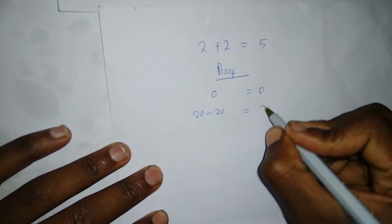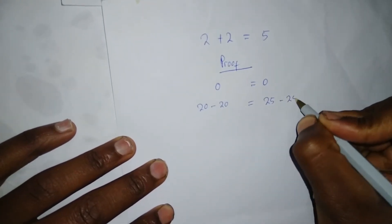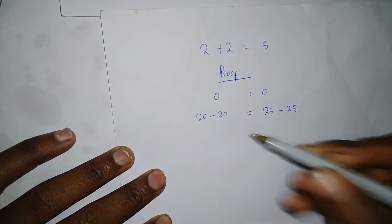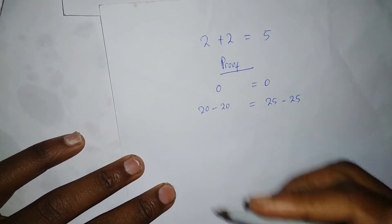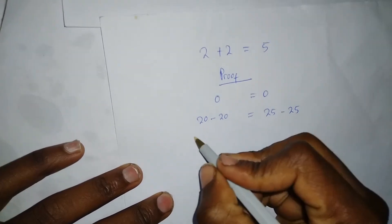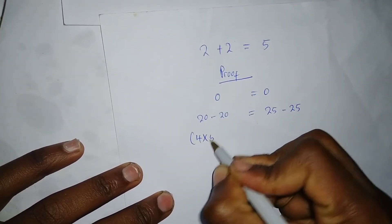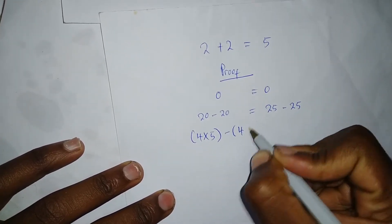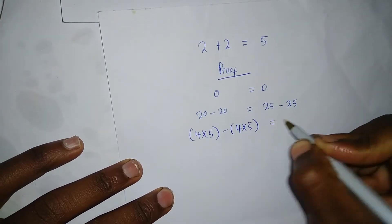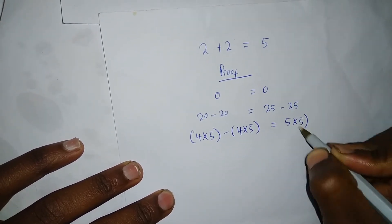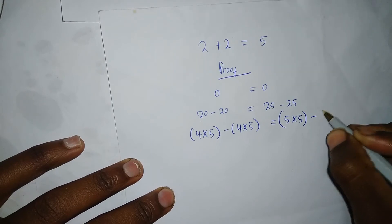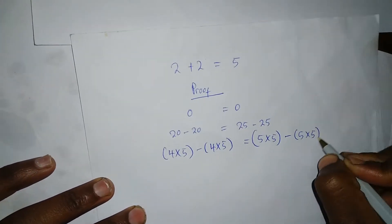let's say 25 minus 25. Again, this is 0 equals 0, right? We can break down this 20. That's 4 times 5 minus 4 times 5 is equal to 5 times 5 minus 5 times 5. Again, this